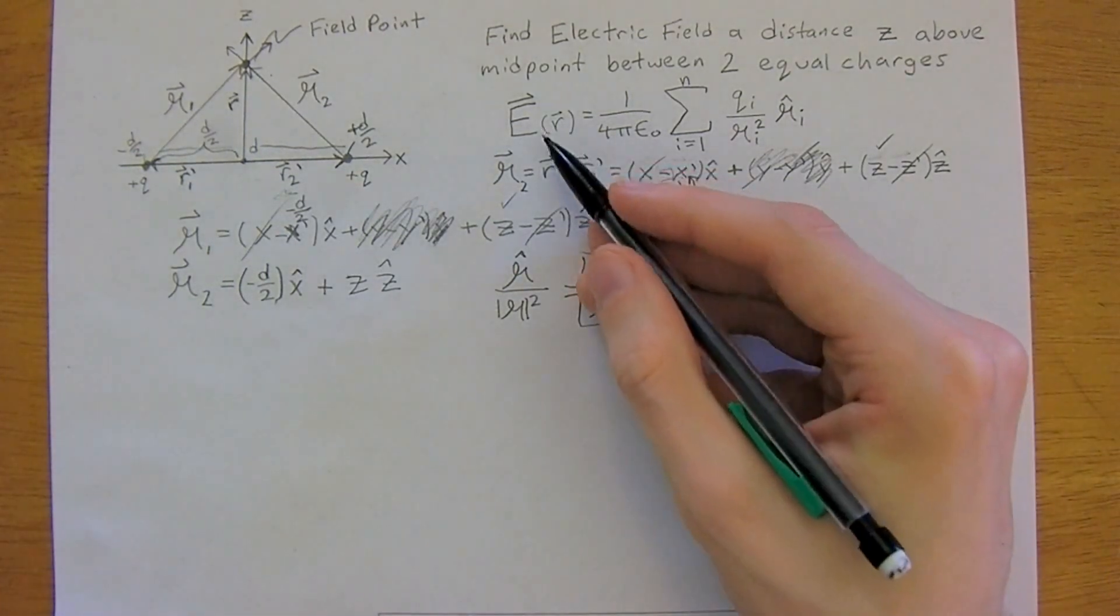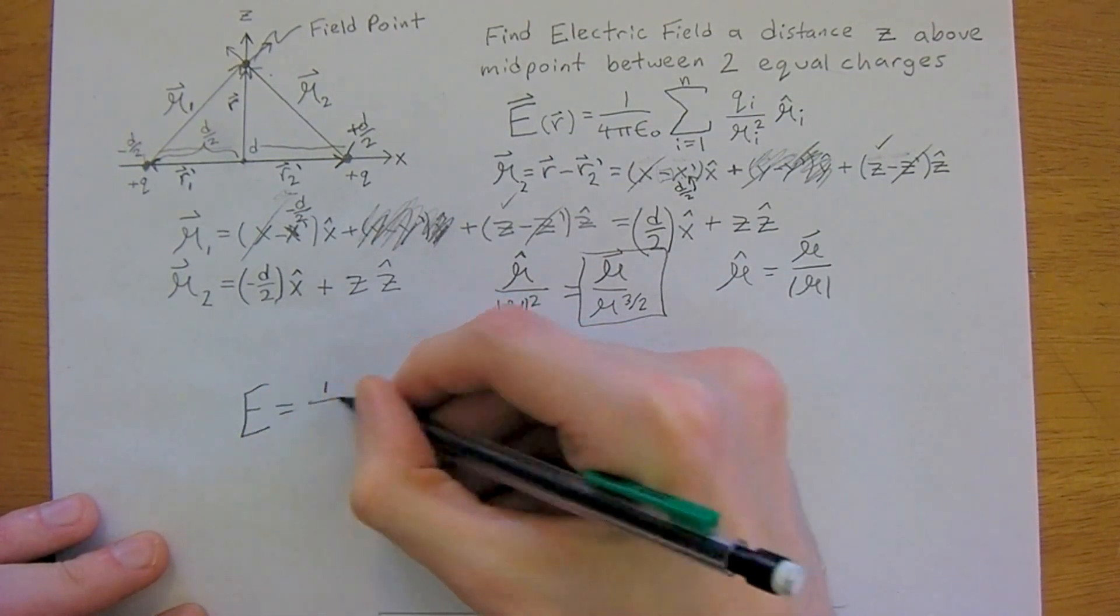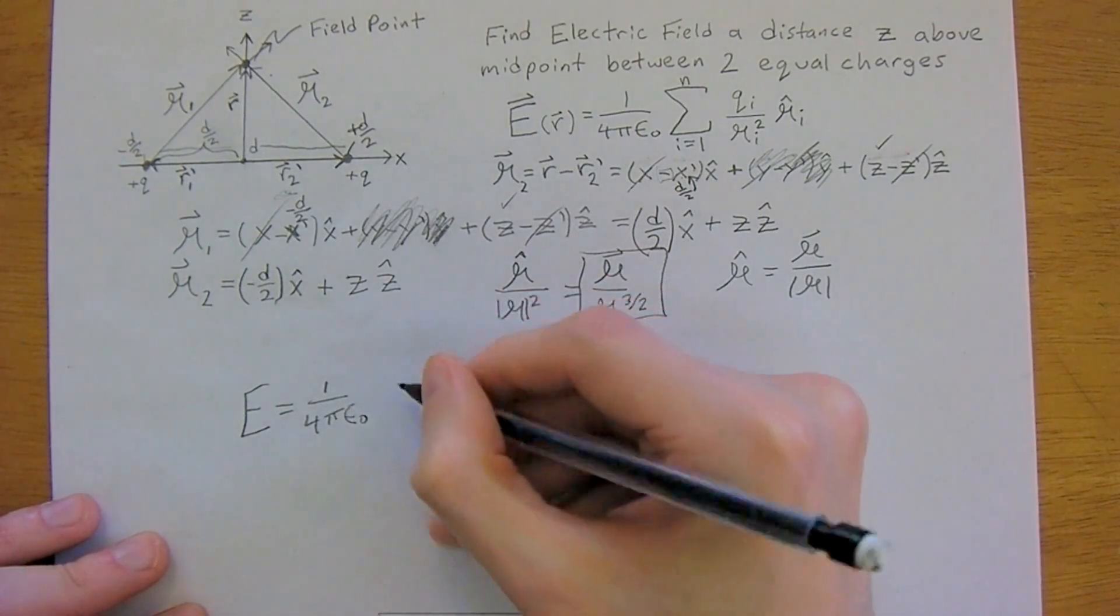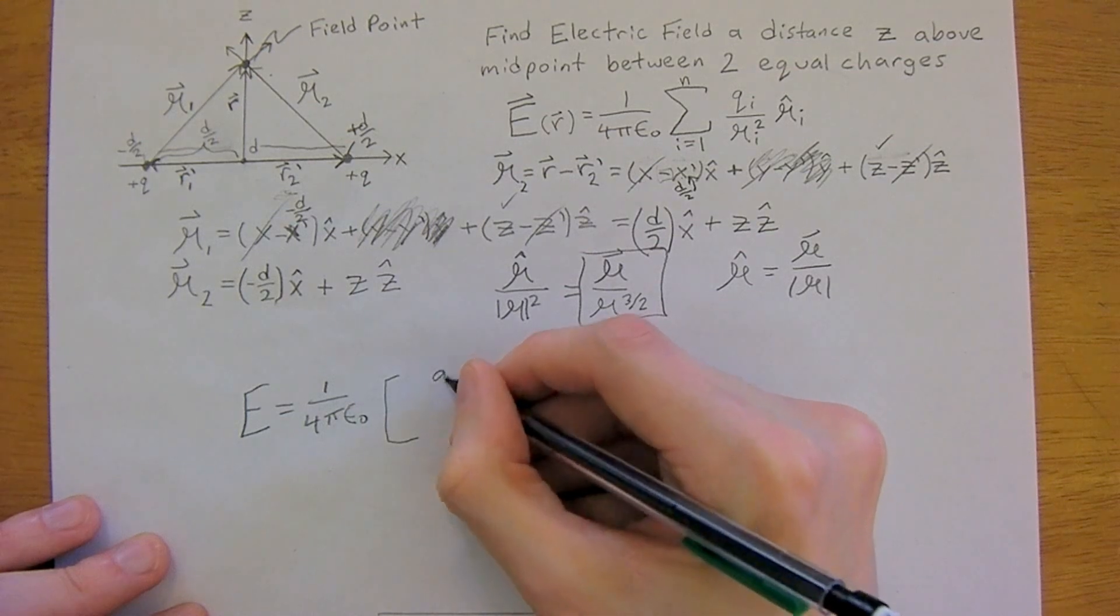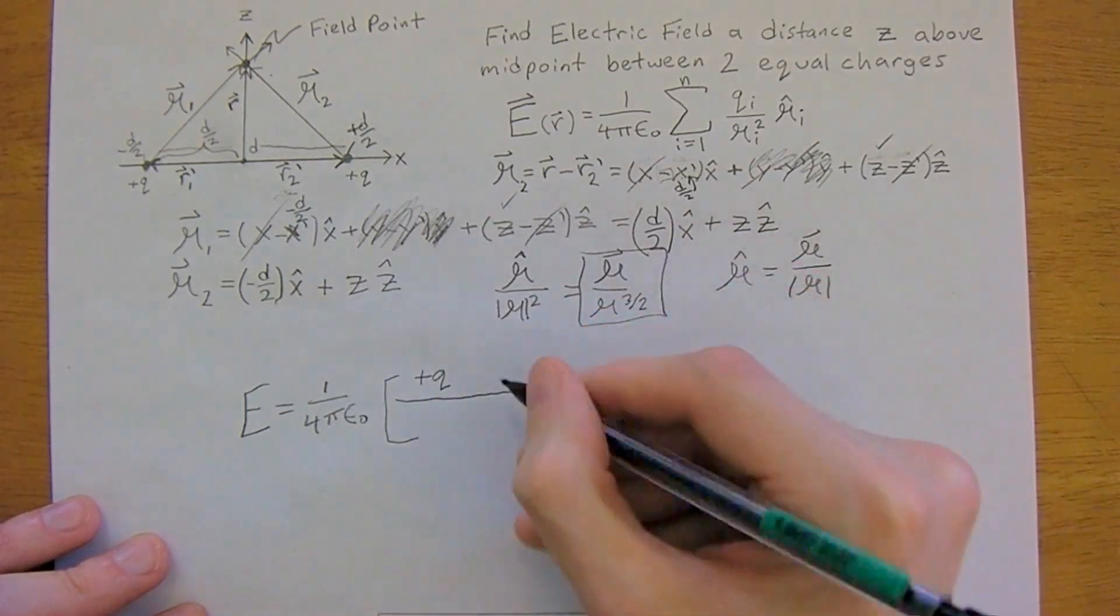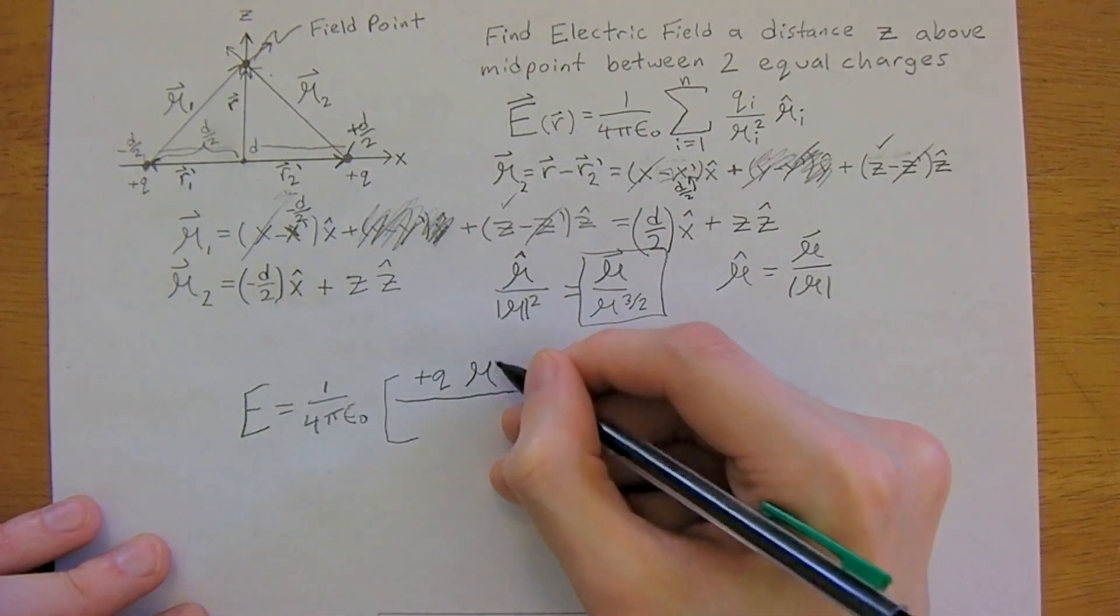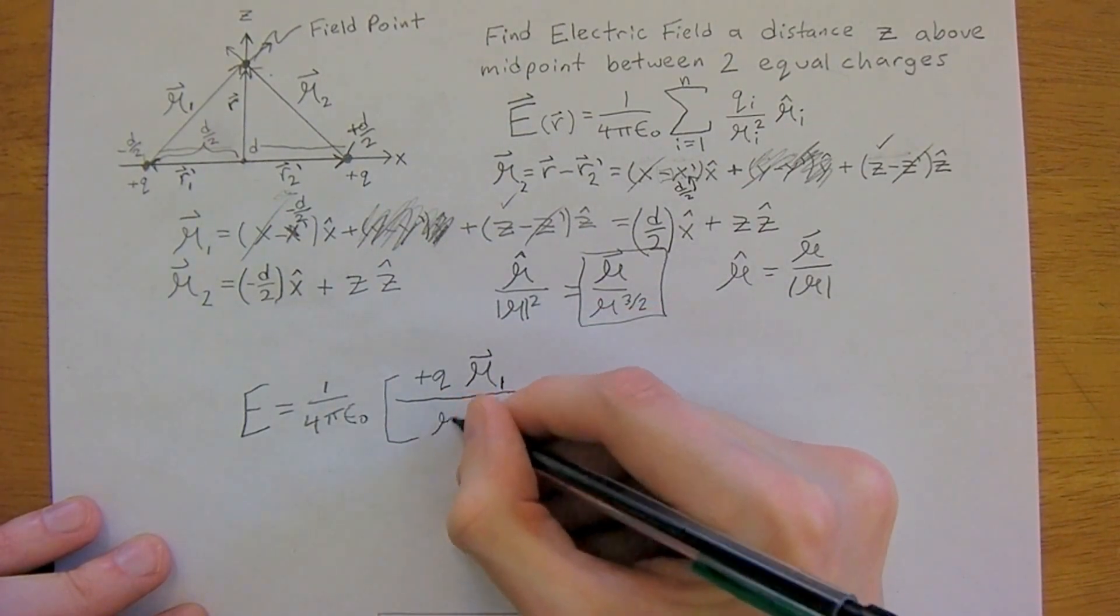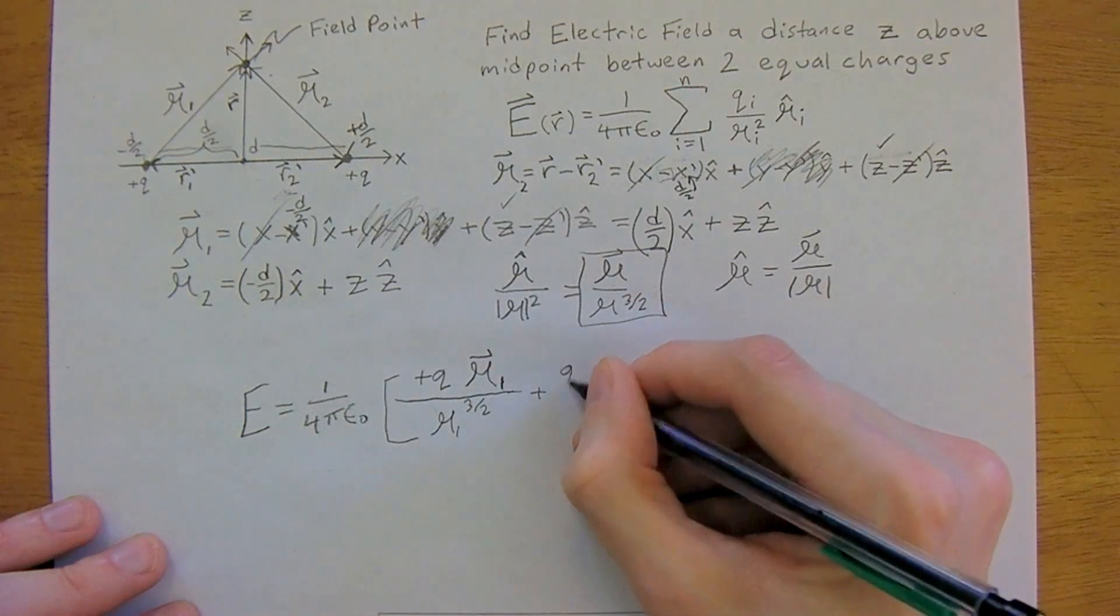So now we're going to use superposition. So e is equal to 1 over 4 pi epsilon 0. I'm just going to add these two up here. So we have q, a positive q, times script r1 vector over r1 to the 3 halves plus q.